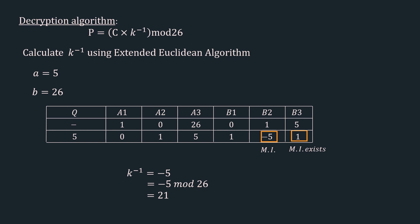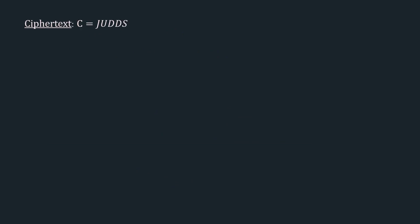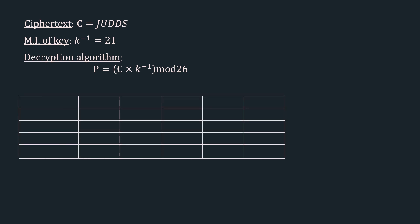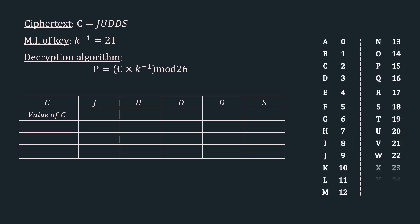Now we have all values for decryption. The ciphertext is J, U, D, D, S, and k⁻¹ = 21. The decryption algorithm is p = c × k⁻¹ mod 26. We construct a decryption table. The numerical values of c are: J = 9, U = 20, D = 3, D = 3, S = 18. Next row is c × k⁻¹: 9 × 21 = 189, 20 × 21 = 420, 3 × 21 = 63, again 63, and 18 × 21 = 378.